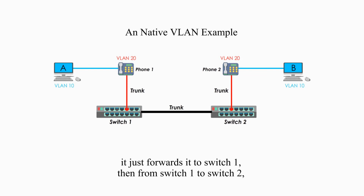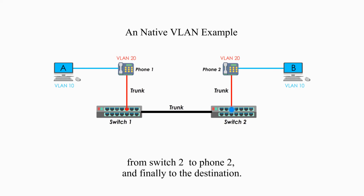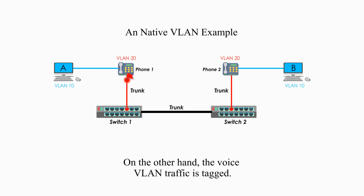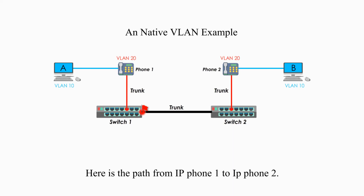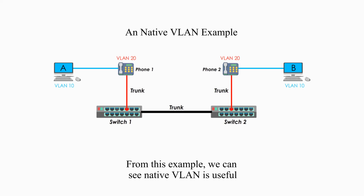The frame travels from switch 1 to switch 2, from switch 2 to phone 2, and finally to the destination. On the other hand, the voice VLAN traffic is tagged. Here is the path from IP phone 1 to IP phone 2. From this example, we can see that native VLAN is useful when the data VLAN and voice VLAN share one same link.